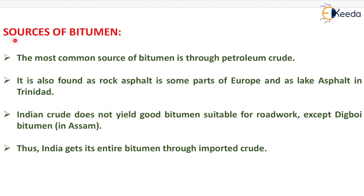Now the sources of bitumen. The most common source of bitumen is through petroleum crude. It is also found as rock asphalt in some parts of Europe and as lake asphalt in Trinidad. Indian crude does not yield good bitumen suitable for roadwork except Digboi bitumen in Assam. Thus, India gets its entire bitumen through imported crude.